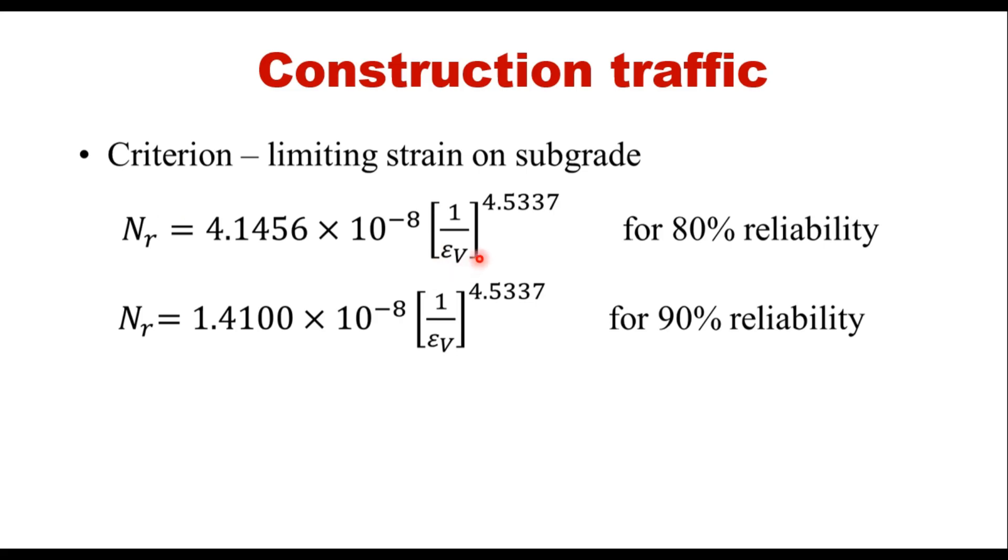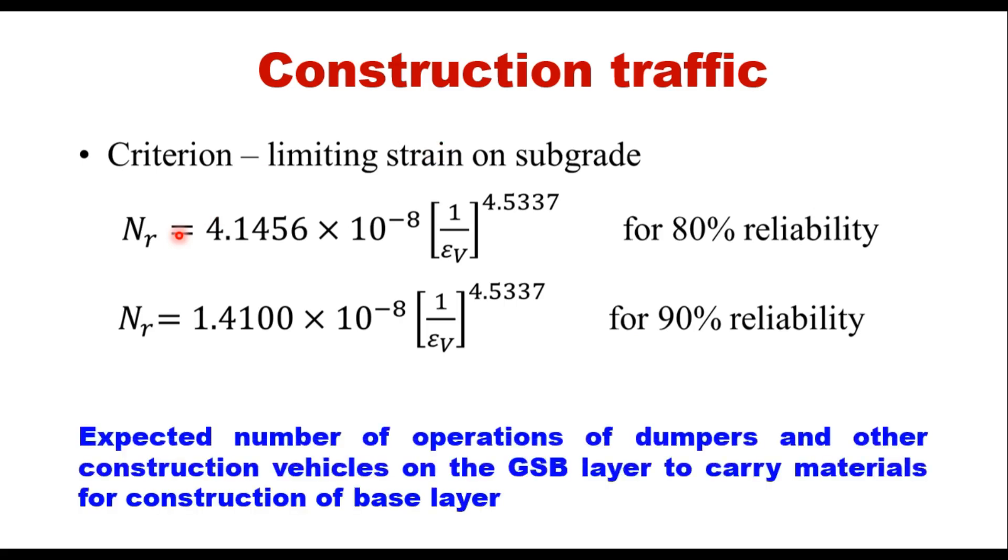Vertical compressive strain at top of subgrade level. This is the equation for 80 percent reliability, this is the equation for 90 percent reliability. Now important here is to determine this limiting strain, and to determine limiting strain you need to know Nr. Nr here is the number of operations of dumpers and other construction vehicles on the GSB layer to carry materials for construction of base layer. The thickness of GSB should be sufficient to carry the traffic coming on while constructing the base layer.